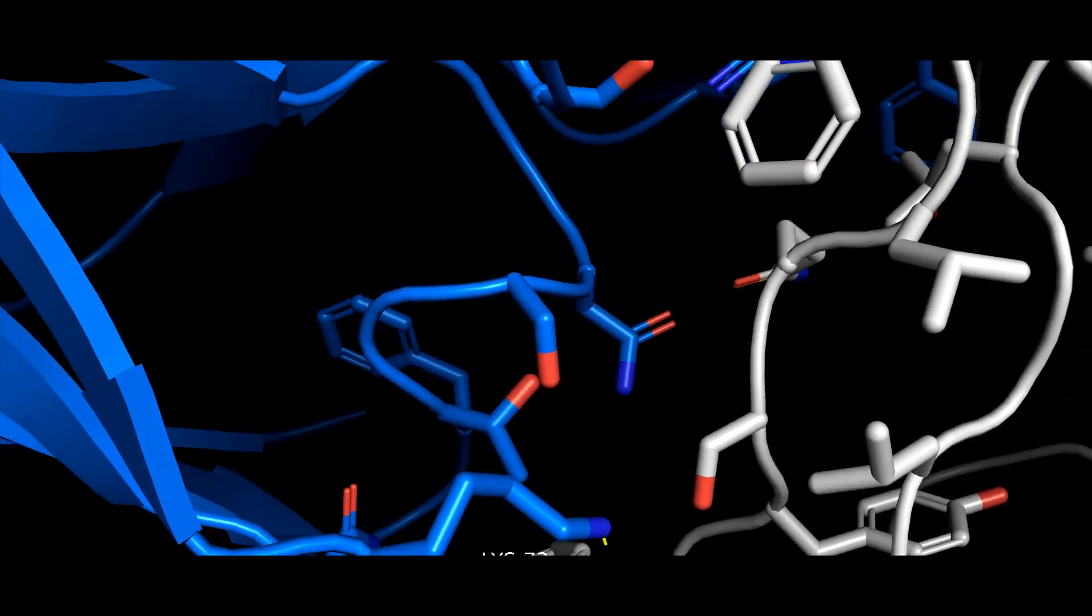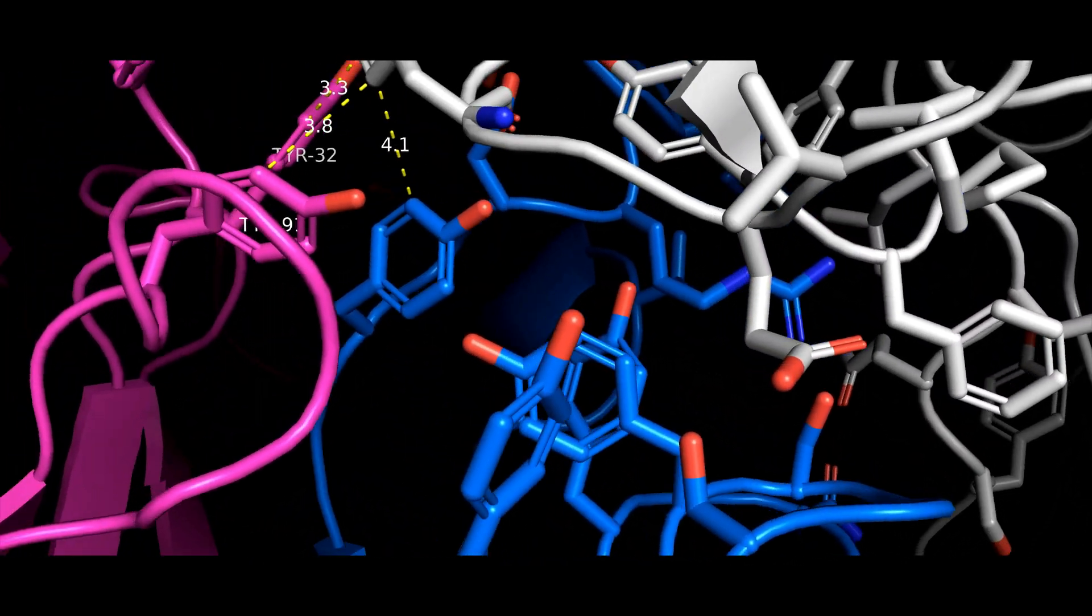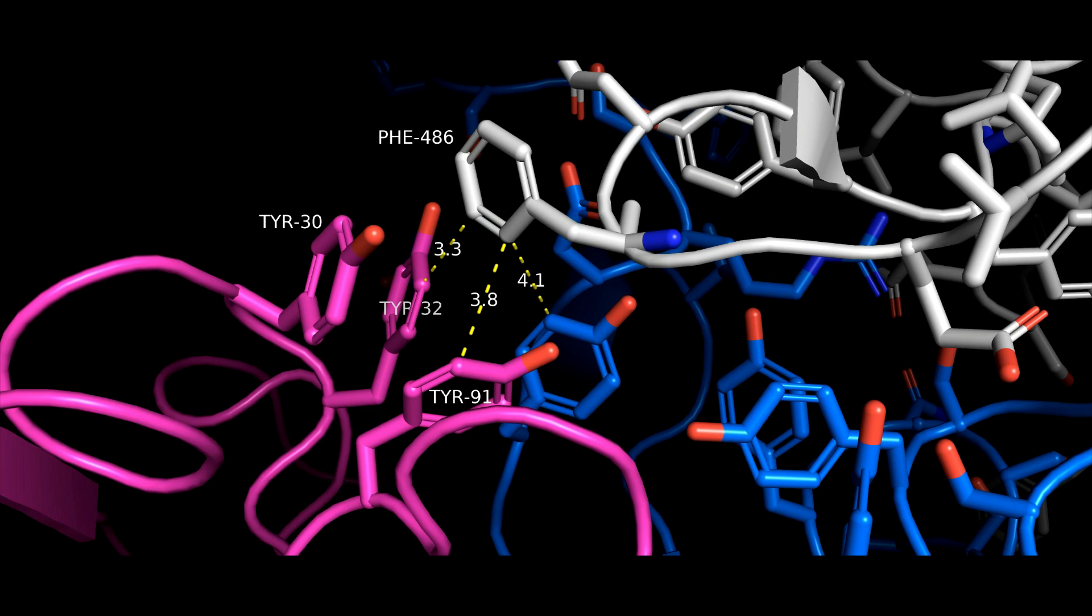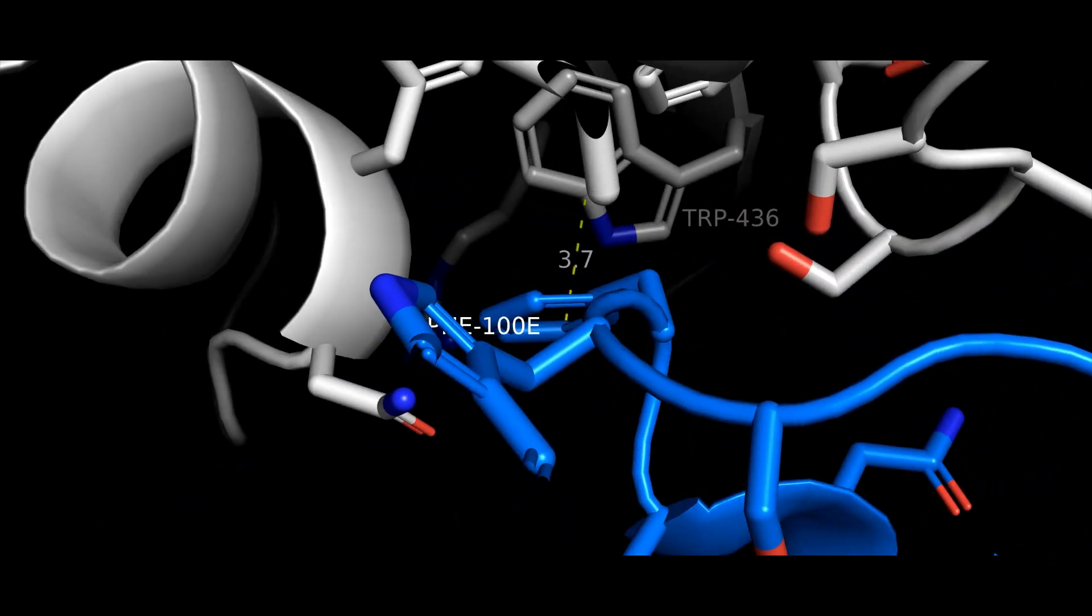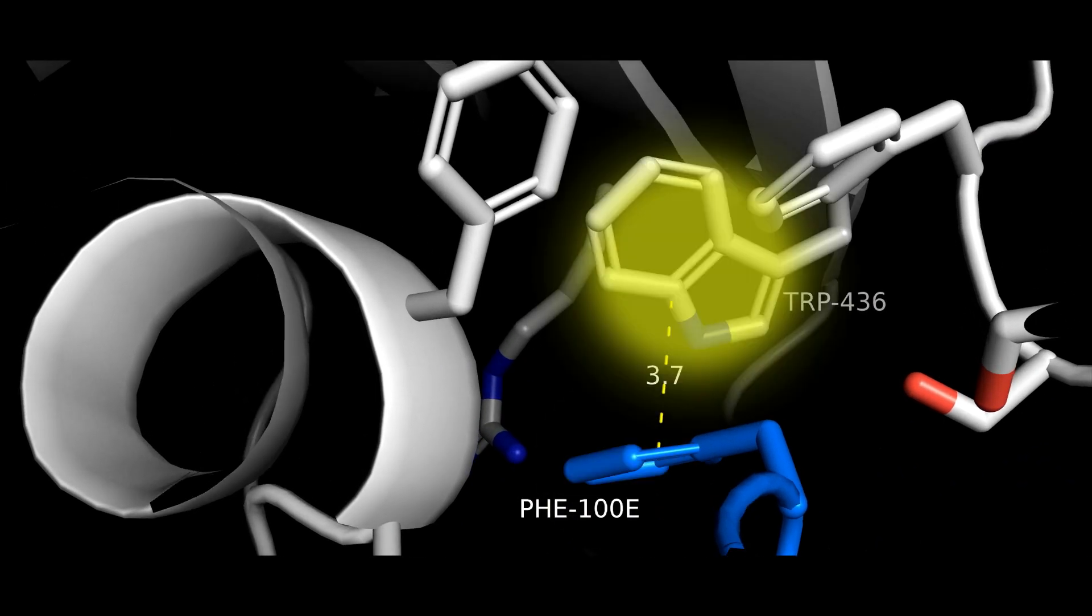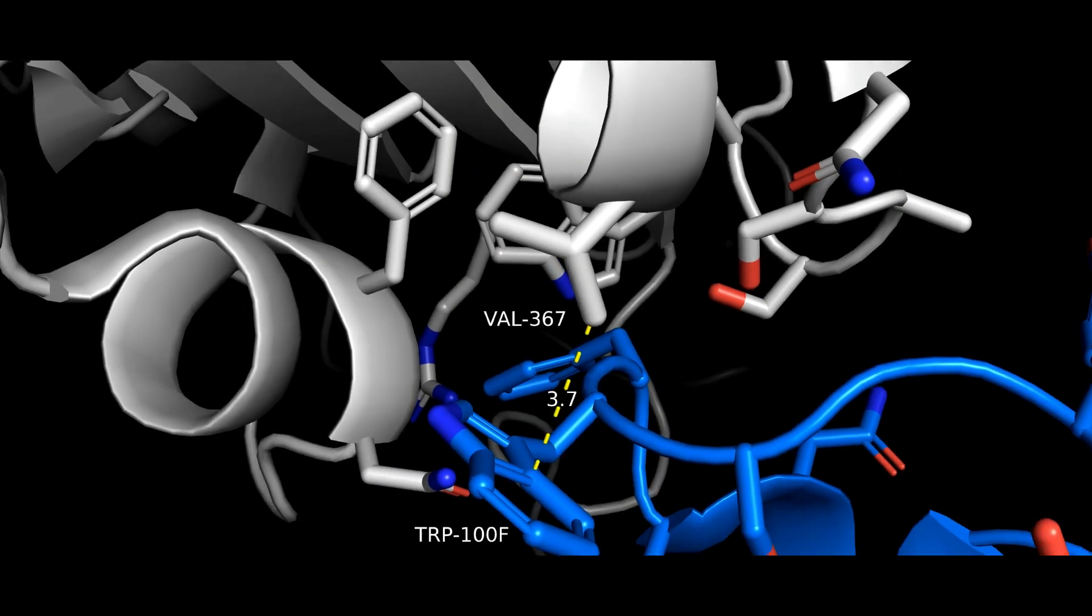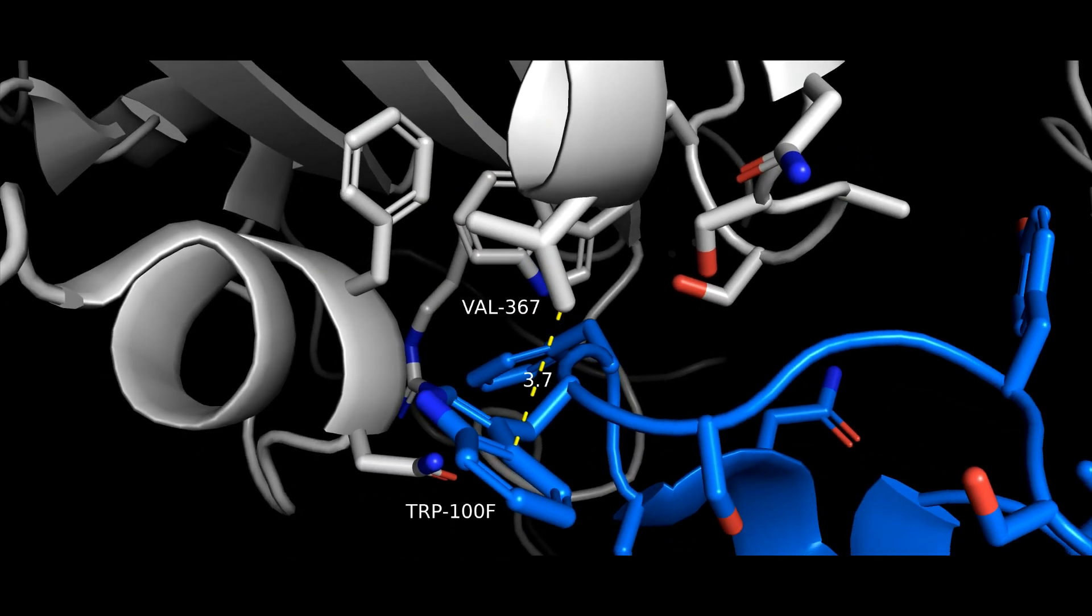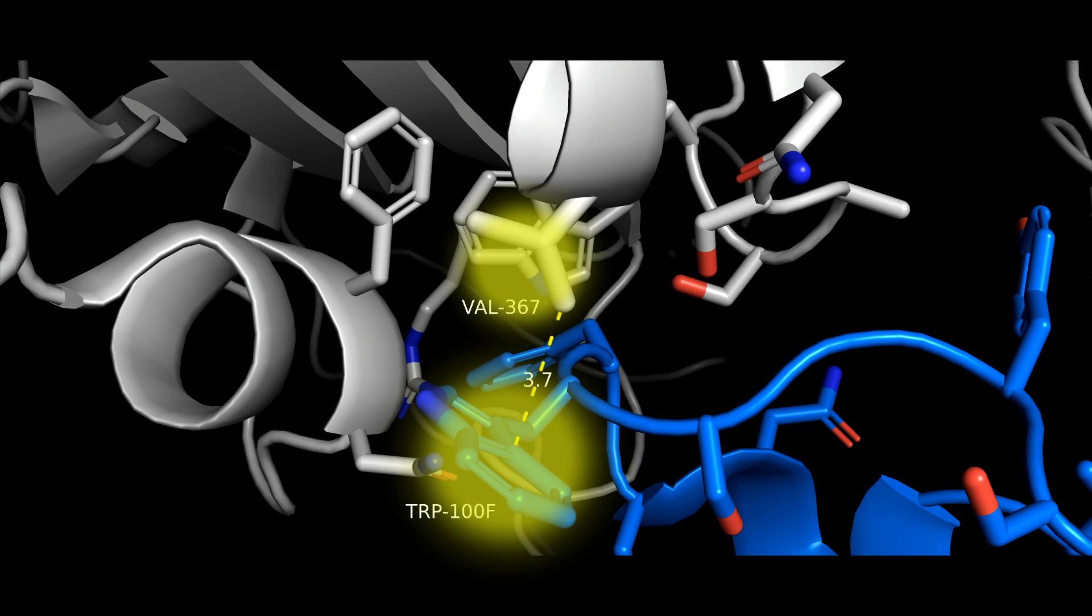Though weaker, van der Waals interactions are also important in binding. And we see a network of these dispersion forces driving the interaction of this phenylalanine on spike with tyrosine residues on both the heavy and light chains of the antibody. Here's another one, this time between a tryptophan and a valine.